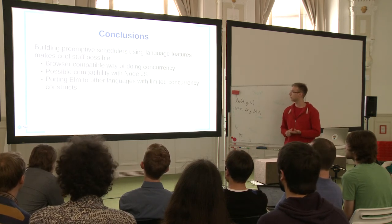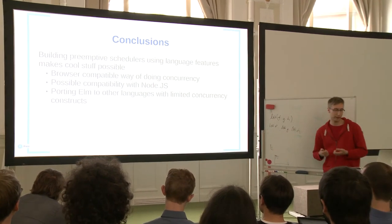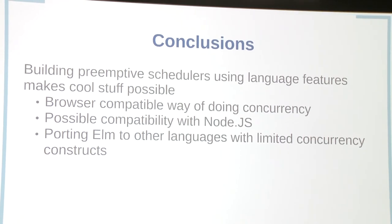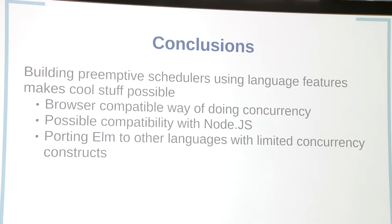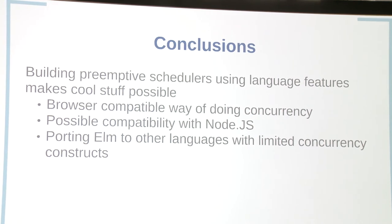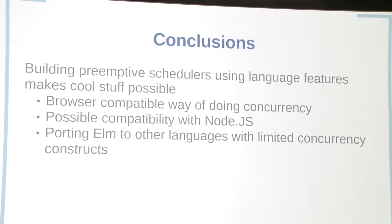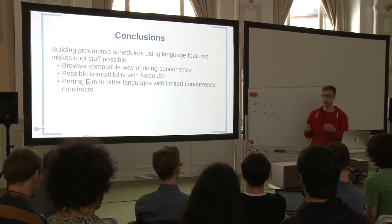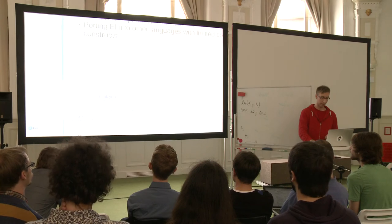In conclusion, building preemptive schedulers brings some useful benefits. We get more browser compatibility — it works not only in modern browsers but also in browsers that don't support web workers or other features. This also allows us to build concurrency in Node.js. These techniques aren't just for JavaScript — they can be ported to other languages as well, so if we decide to target another language we can reuse these methods.